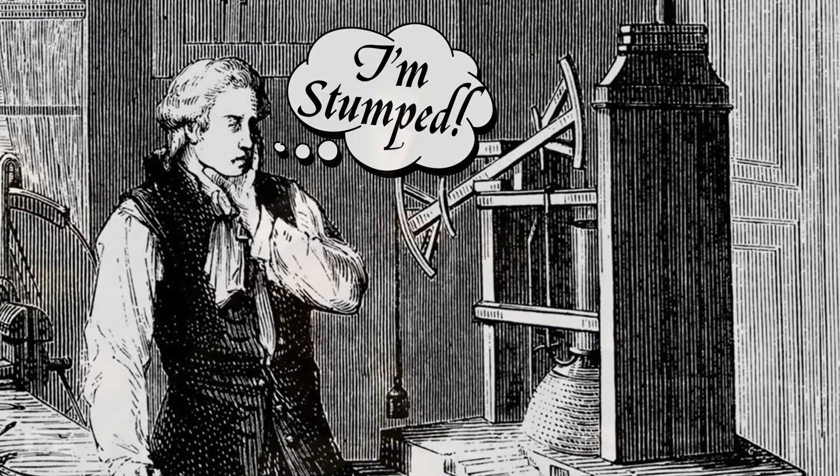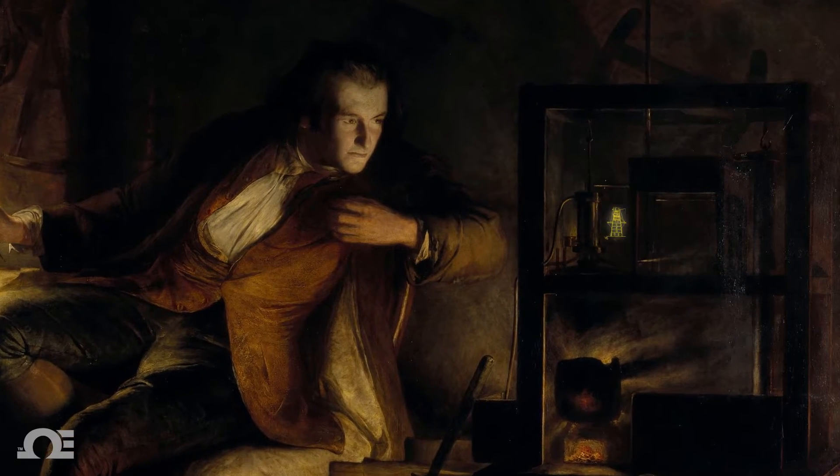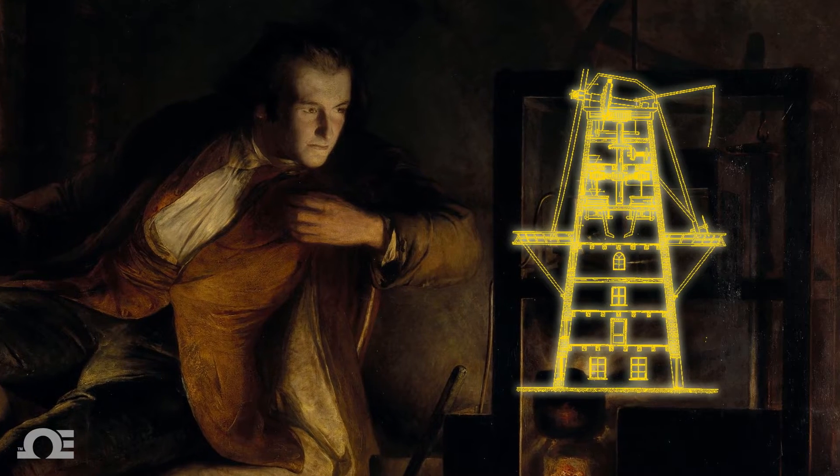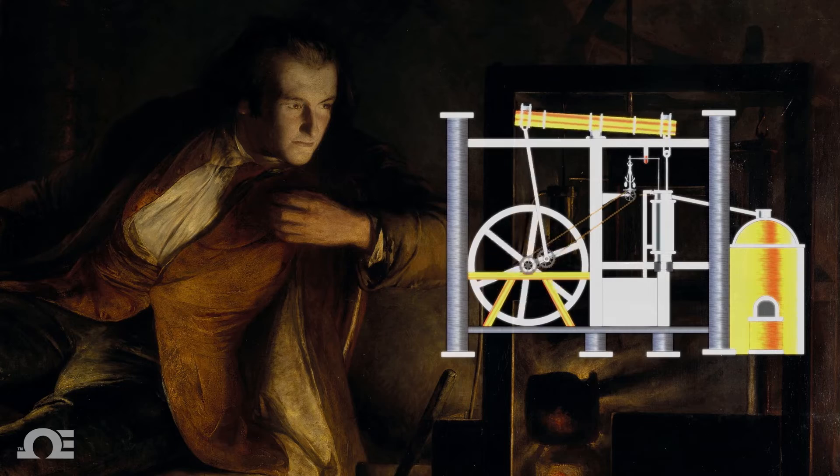He stumbled on a mechanism known as a fly ball or centrifugal governor, which had been used in windmills for nearly a century, regulating the distance and pressure between the millstones. Watt saw this as the perfect solution and adapted the device to control the speed of his steam engine.